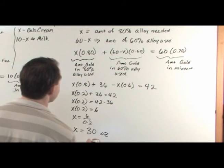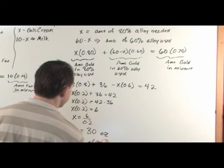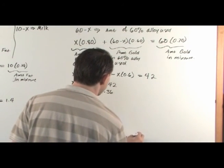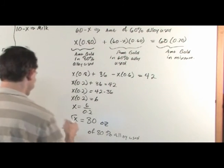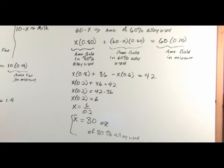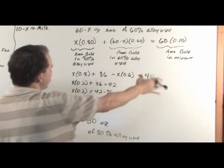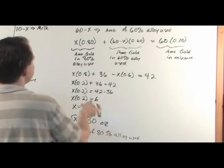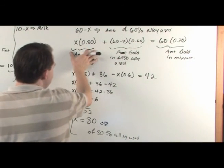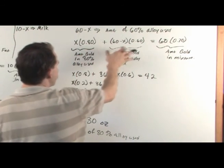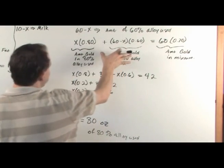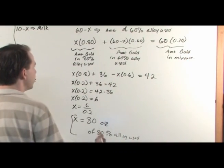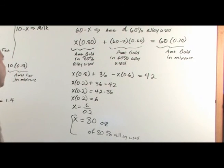So it's 30 ounces of 80% alloy used. The trick is writing this equation correctly. When doing mixture problems, you're generally writing an equation in terms of what you're mixing together — the amount of gold in the first alloy plus the amount of gold in the second alloy equals the total amount of gold in the final mixture. That sets the problem up so you can solve it.